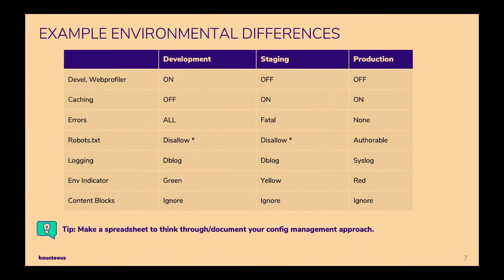The scenario I want to present is just a garden variety website. We have Dev, Staging, and Production environments, and we have some needs laid out in a spreadsheet about what we want different between those as far as configuration goes. For development, we want the Devel module, Devel Generate, and Web Profiler turned on, but in staging and production we don't want those turned on.